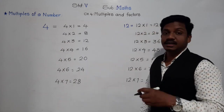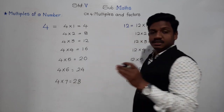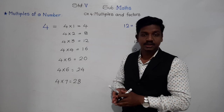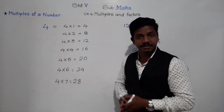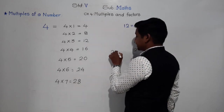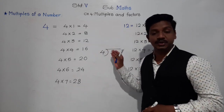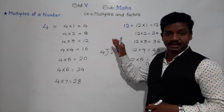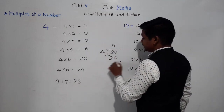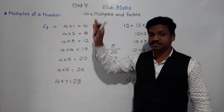Another definition of multiples: the numbers which are exactly divisible by the given number. For example, if we take 20 and divide it by 4, 20 is exactly divisible by 4, meaning the remainder equals 0. Since 4×5 = 20, the remainder is 0, confirming that 20 is exactly divisible by 4.